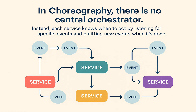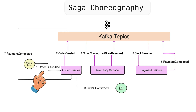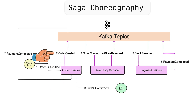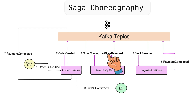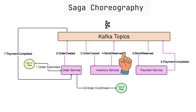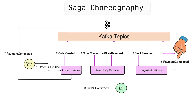Let's take the same three services to understand how things work in Saga choreography. When a user submits an order, the order service receives the request, creates the order, and emits an order created event. The inventory service is listening to the order created event, so when it sees one, it reserves the stock and emits a stock reserved event. The payment service listens to the stock reserved event, and once it receives it, it charges the customer and emits a payment completed event.